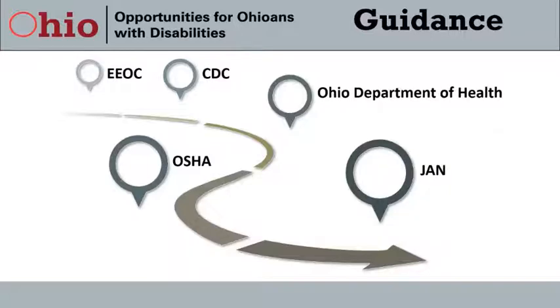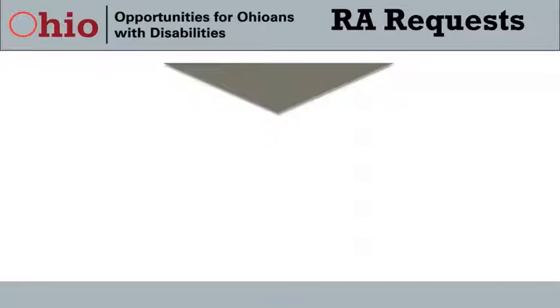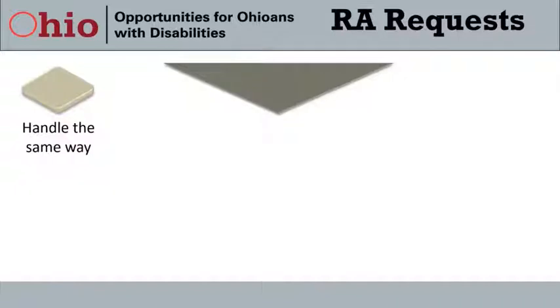Now we are going to discuss some trends related to the pandemic occurring during the interactive process, which is the process employers engage in when they receive a request for a reasonable accommodation. Employers should handle a request from an employee who did not have a reasonable accommodation before the pandemic but requests one now upon returning to the workplace the same way they handle any request — by beginning the interactive process. Individuals with disabilities can request a reasonable accommodation at any point during the hiring process and employment.